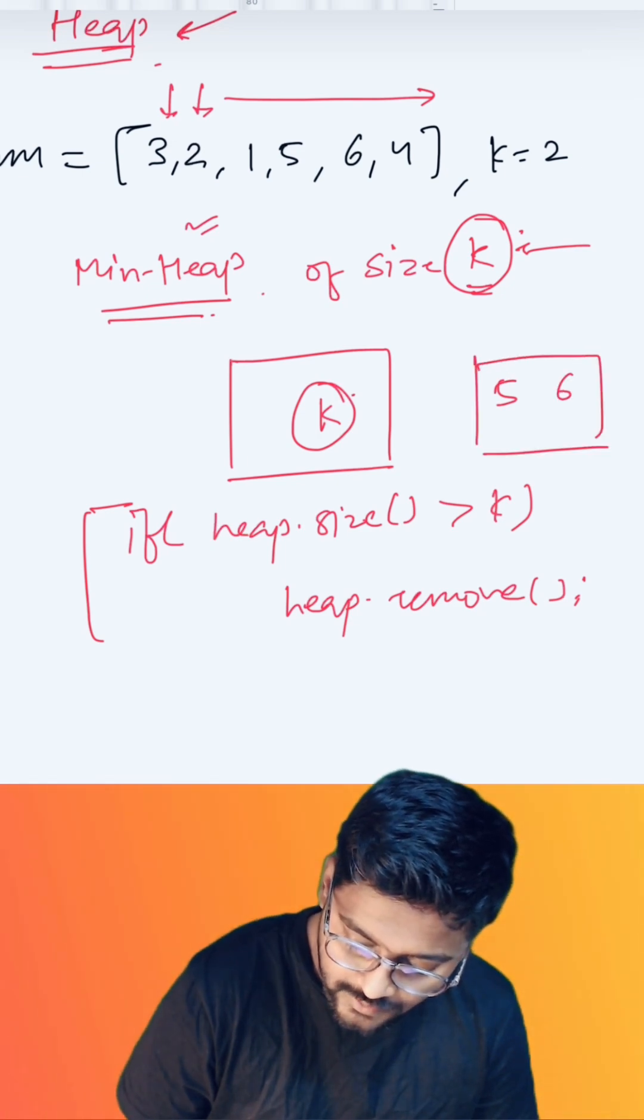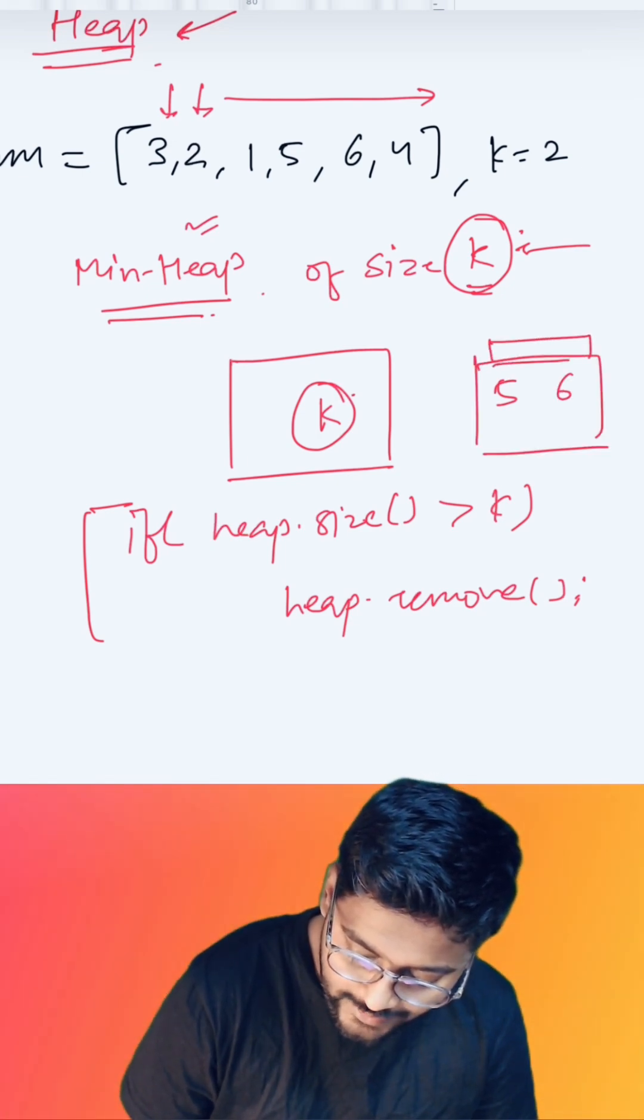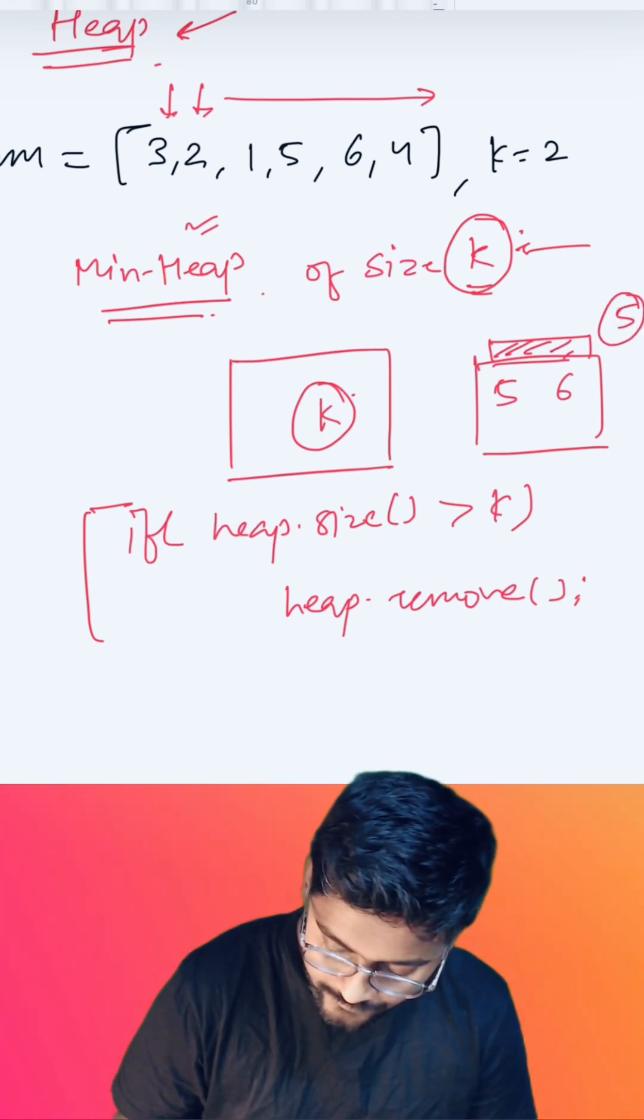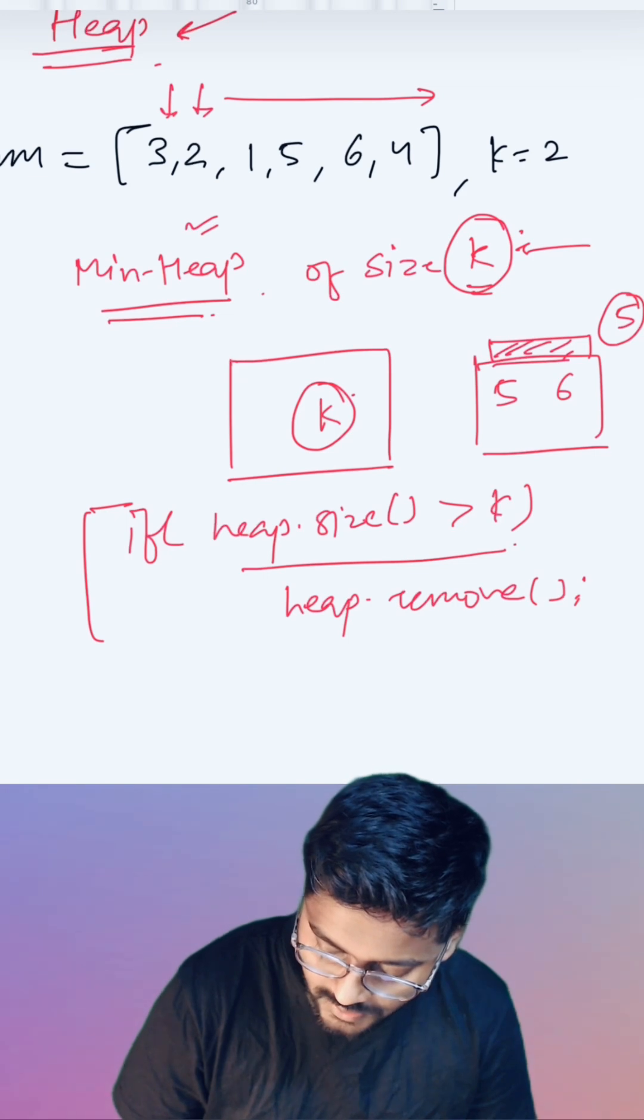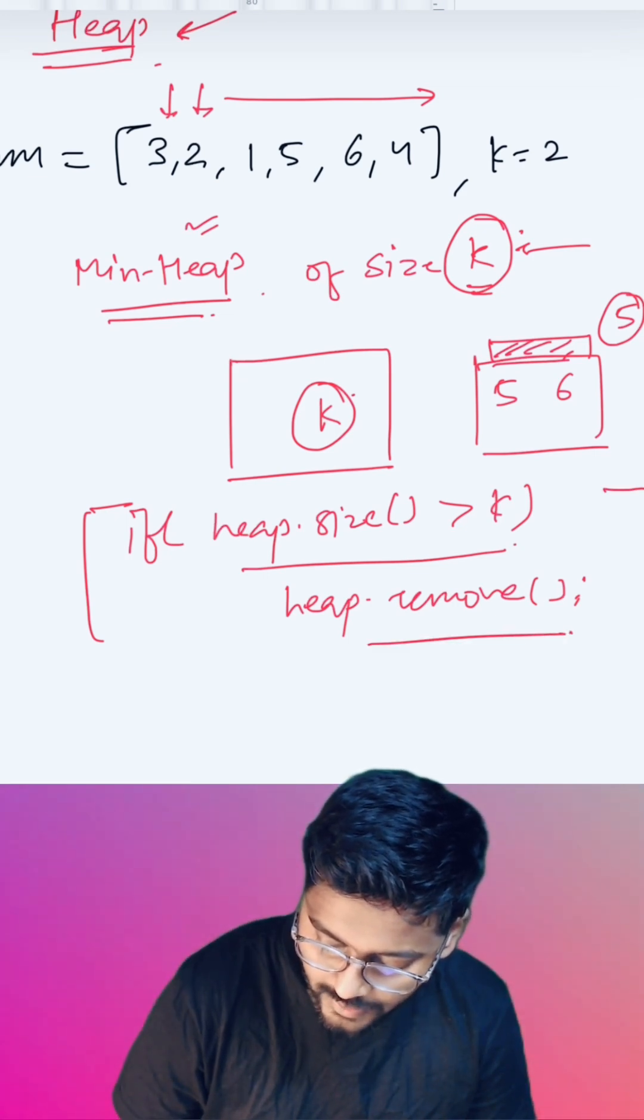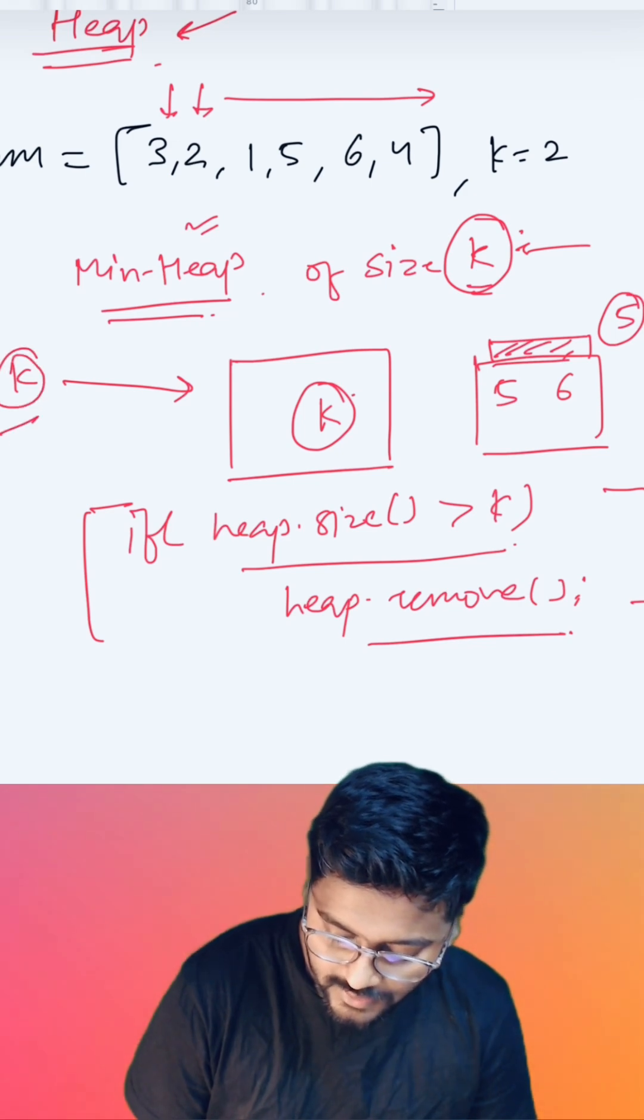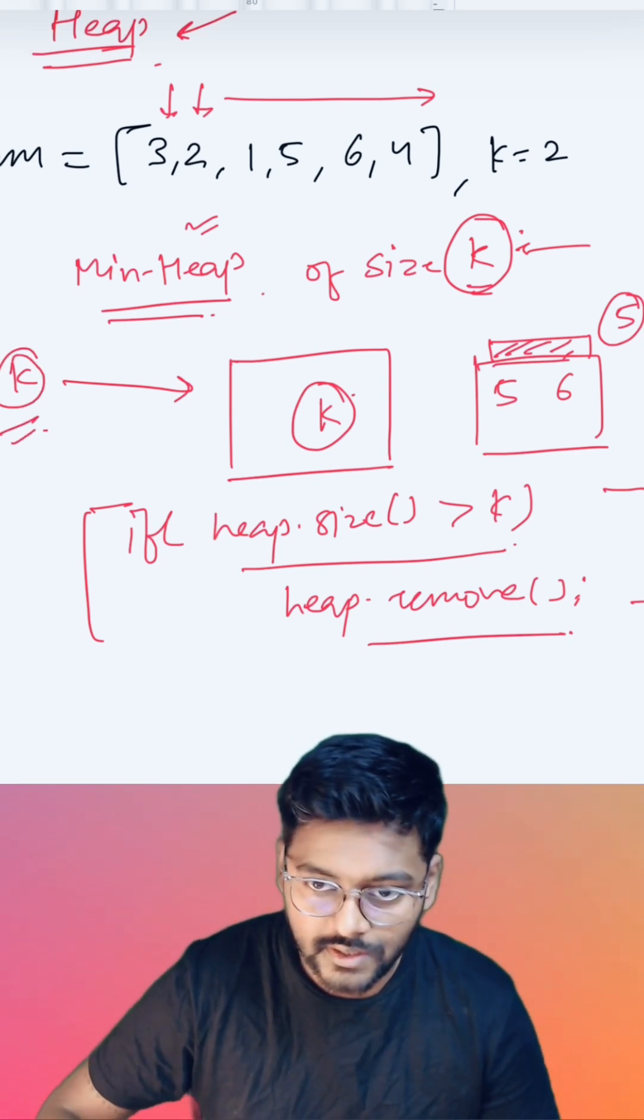In the min heap, and now if we remove any element from the heap, that will be five, which is the kth largest element. If heap size is crossing k, we just remove the minimum element, and in the end we are going to have k largest elements in our heap, so we can directly return the kth largest element.